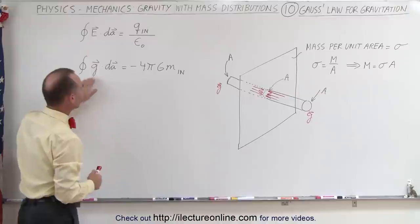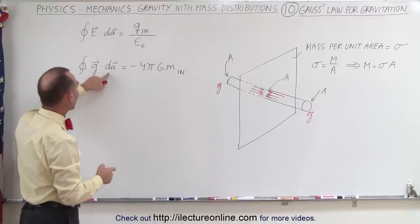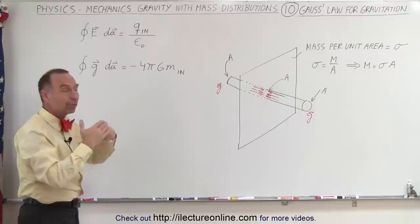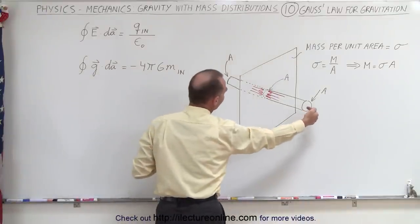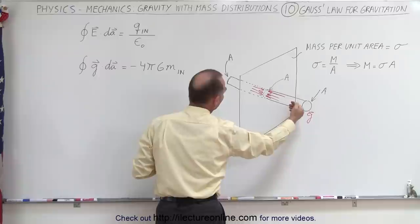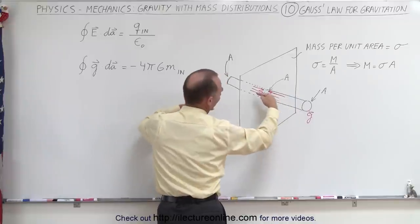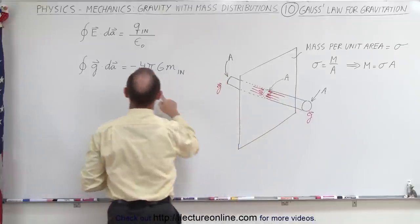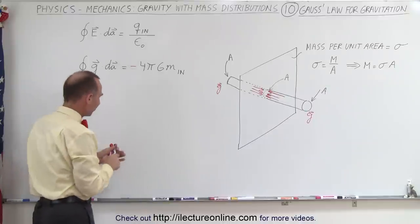So now we're going to calculate this. What we're going to do is realize that when we do the dot product here, these are perpendicular to each other. We have the field going in one direction and the area vector going out, which means they differ by 180 degrees. That's where the negative sign comes from.